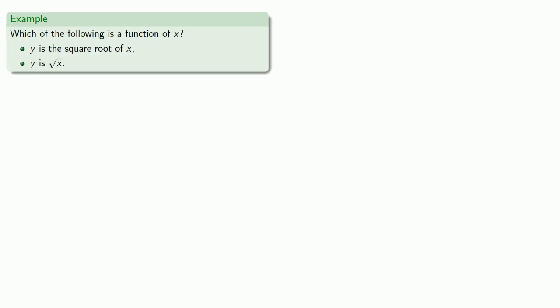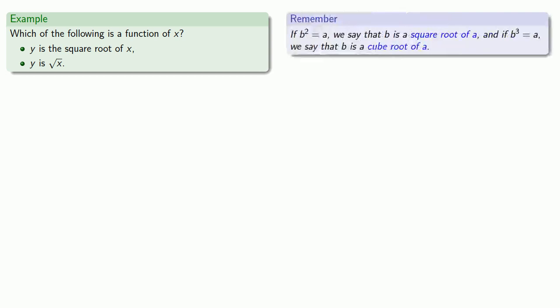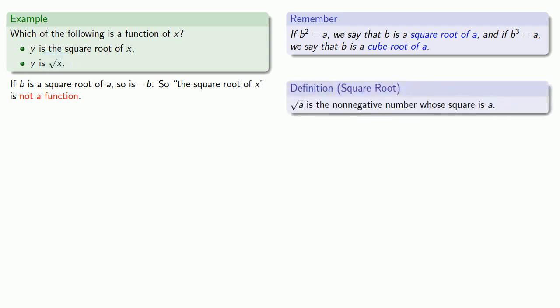Or we can have the following: y is the square root of x. Remember, how you speak influences how you think — y is the principal square root of x. Definitions are the whole of mathematics, all else is commentary. What's our definition of square root? If b squared equals a, we say that b is a square root of a. But this means that if b is the square root of a, so is negative b — so the square root of x is not a function. On the other hand, this symbol refers to the principal square root of a, which is the non-negative number whose square is a. Since the principal square root of a is the non-negative number whose square is a, and there can be only one, the principal square root of x is a function.